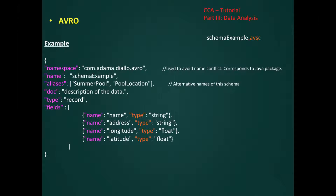Let's now define the schema for our previous data example. To define the schema in Avro, we have to define the namespace — it's like defining a package name in Java. Then we define the name of the schema. We can optionally define different aliases, add a description, and we have to specify the type of schema. In this case, because we have different fields, we need to use the type record.